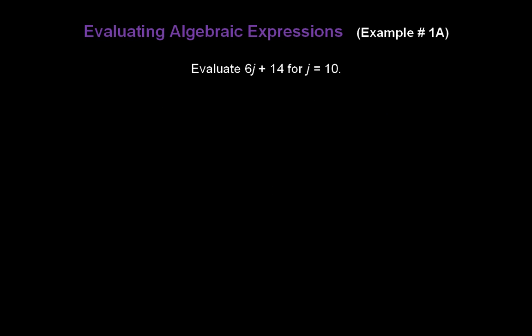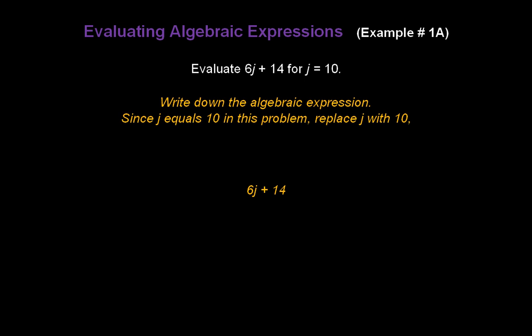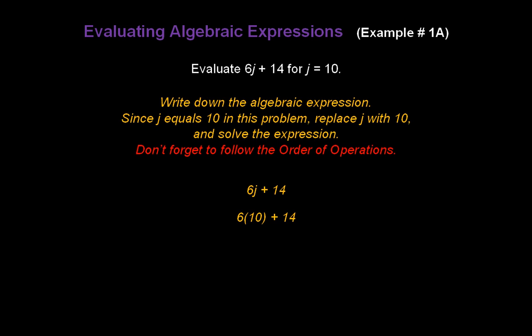Here's one that's a little more complicated. Evaluate 6j plus 14 for j equal to 10. First, write down the expression: 6j plus 14. Since j equals 10, we replace j with 10, and since 6j means 6 times j, we write 6 times 10 plus 14. Now don't forget to follow the order of operations — we have multiplication and addition, so we multiply first. 6 times 10 is 60, giving us 60 plus 14, and the final answer is 74.